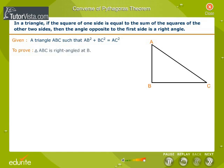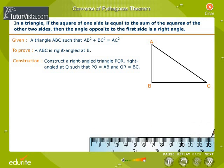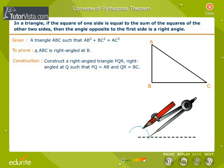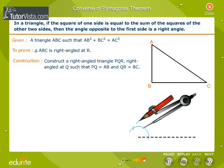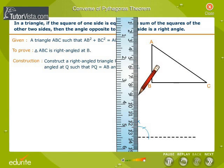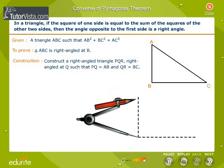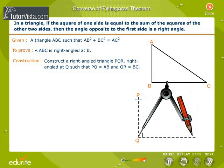To prove that triangle ABC is right-angled at B. Construction: Construct a right-angled triangle PQR right-angled at Q, such that PQ = AB and QR = BC.